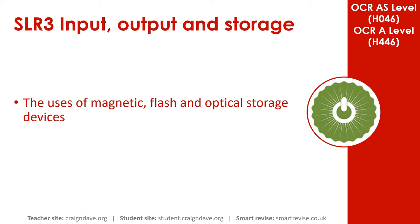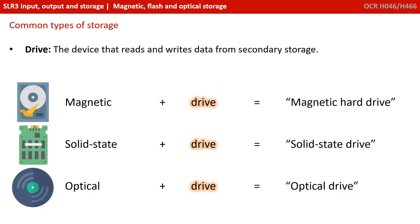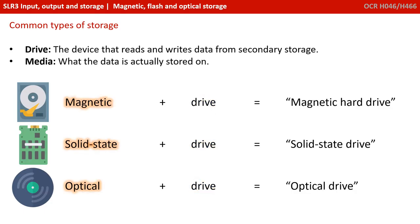In this video, we look at the uses of magnetic, flash, and optical storage devices. The device that reads and writes data from secondary storage is generally referred to as the drive. What the data is actually stored on is referred to as the media.